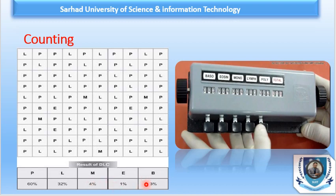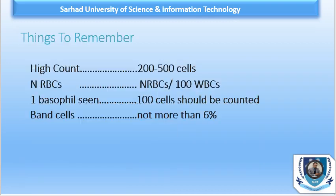Things to remember: if the count is very high, it is better to count 200 to 500 cells to get an accurate idea of relative proportions. If nucleated red blood cells (NRBCs) are present, they are not included in the WBC count — they are counted separately and reported as the number of nucleated red cells per 100 WBCs. If one basophil appears in 100 cells, another 100 cells should be counted to estimate the correct percentage.